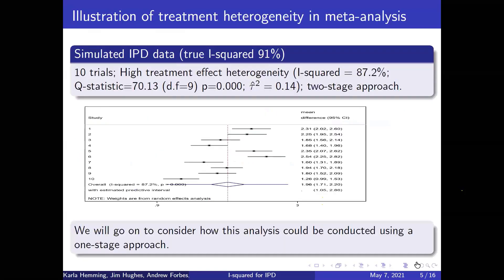I'm going to illustrate that approach using some simulated individual participant data — simulated with a continuous outcome and lots of treatment effect heterogeneity. The underlying true I-squared of this data was 91%. Summarizing each study separately using a two-stage approach, then pooling using a random effects meta-analysis, we get our pooled estimate represented by the diamond, and also a wider predictive interval. Some studies show a positive impact of the intervention, others a negative impact. Although our pooled estimate is pretty tight around the null, the predictive interval tells us there's a lot of uncertainty about the underlying value in this dataset.